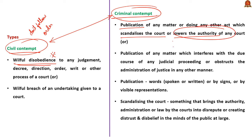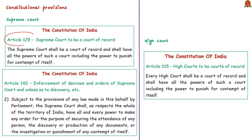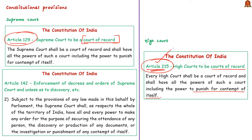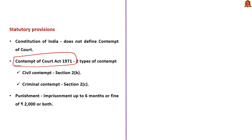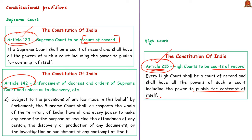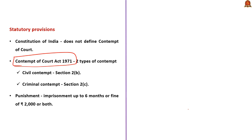Now let us see the constitutional provisions regarding contempt of court. Article 129 states that the Supreme Court, as a court of record, has powers for contempt of court — it has power to punish for its own contempt. With regards to High Courts, Article 215 declares them as courts of record with powers to punish for contempt of themselves. In addition, we have statutory provisions under the Contempt of Court Act 1971, and Article 142 clause 2 also mentions contempt of court. However, the Constitution of India does not define contempt of court — it is defined in the Contempt of Court Act 1971.